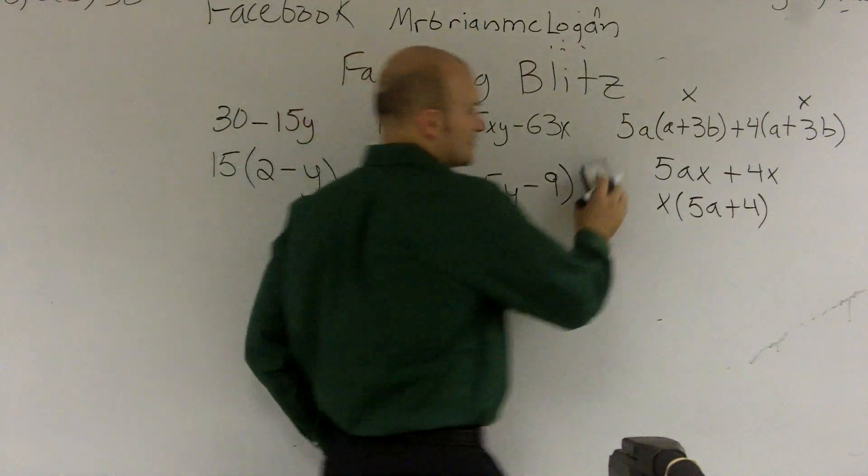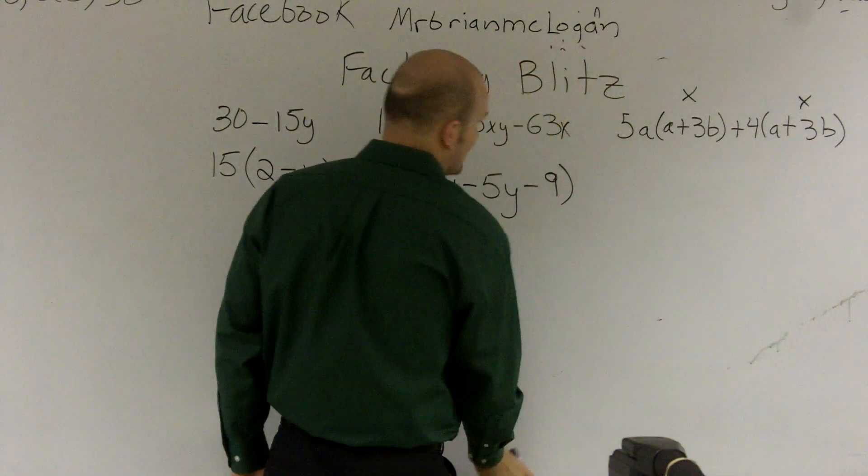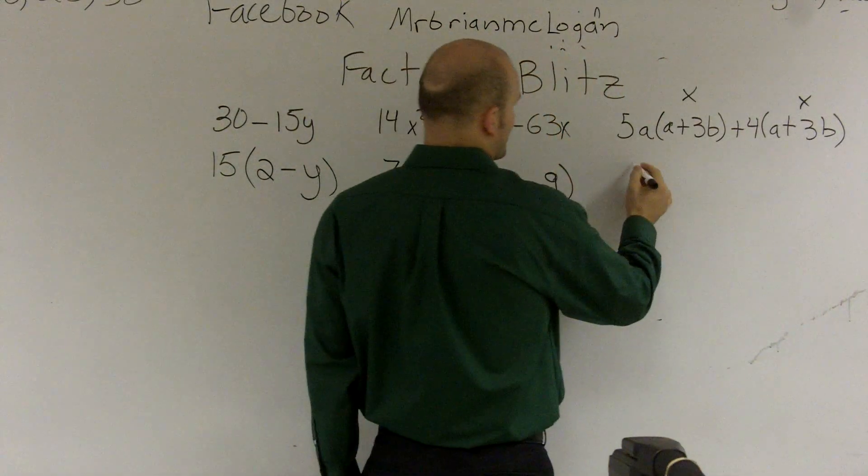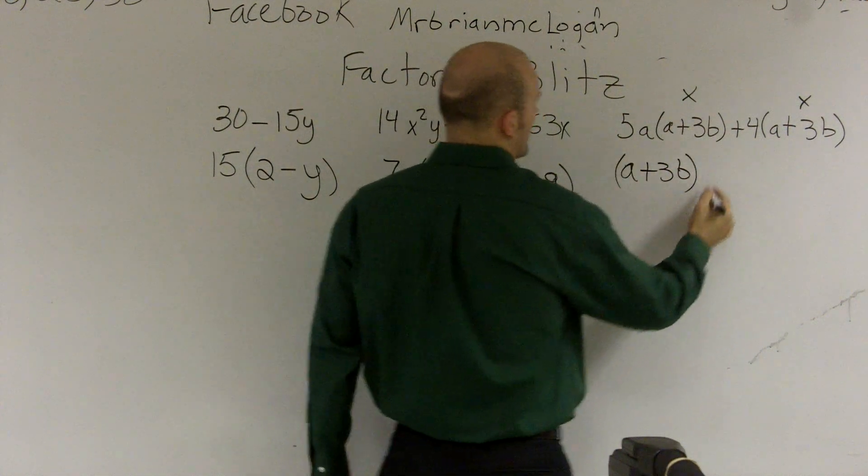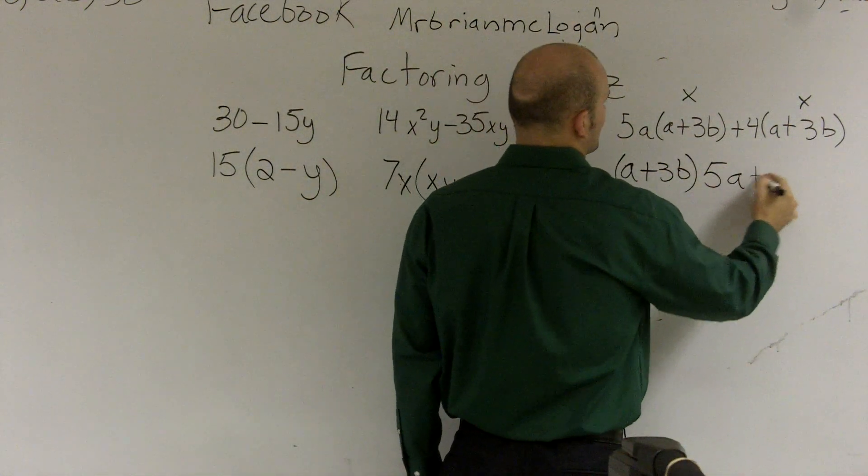However, they're not x's, they're different. They're a plus 3b, but still we can do the same thing. Factor out an a plus 3b and you're left with 5a plus 4.